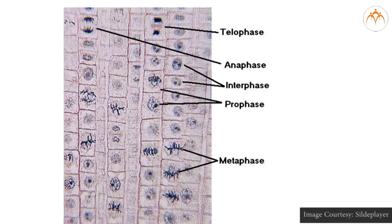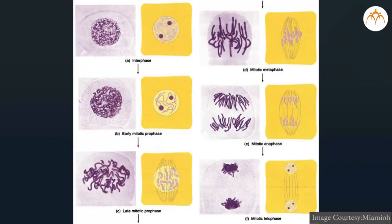Karyokinesis is complete, which is followed by cytokinesis. In cytokinesis, the cytoplasm divides to form two new daughter cells. In plants, there is a cell plate, and in animal cells, it is a cleavage furrow formed during cytokinesis. The chromosome number of parent and daughter cells remains equal.